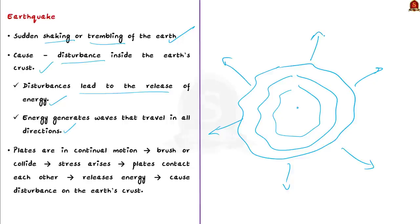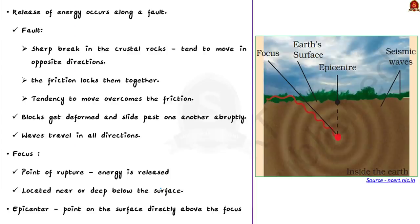The plates inside the earth are in continual motion. During their movement, they brush past one another or one plate goes under another due to collision. When these plates contact each other, stress arises, resulting in a release of energy that causes disturbance in the earth's crust. This disturbance shows up as an earthquake on the surface of the earth. The release of energy during an earthquake occurs along a fault.